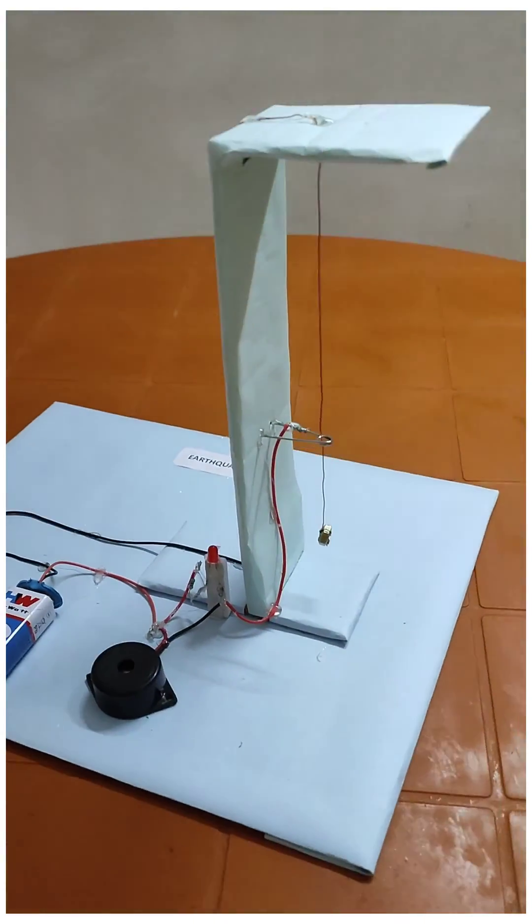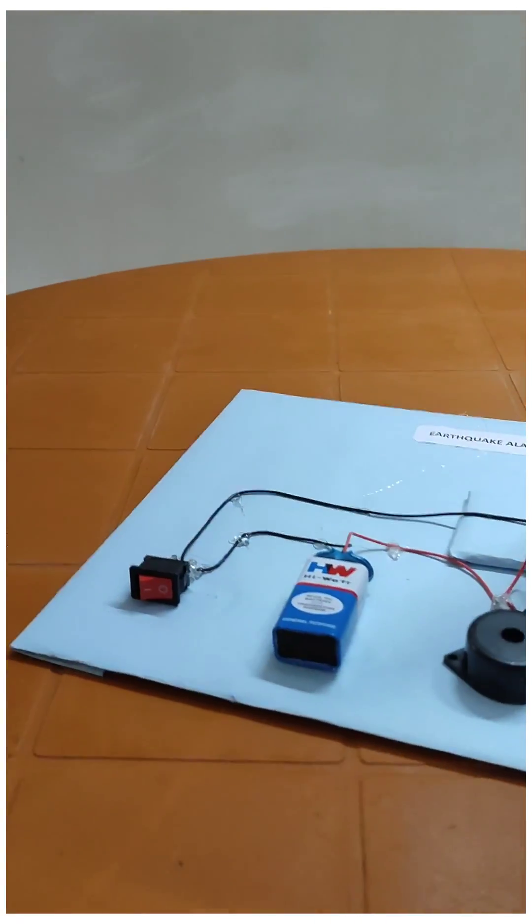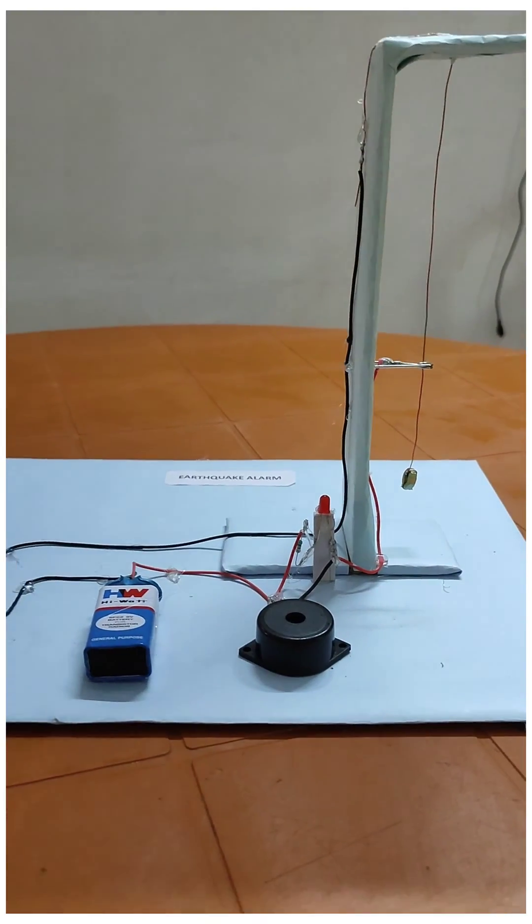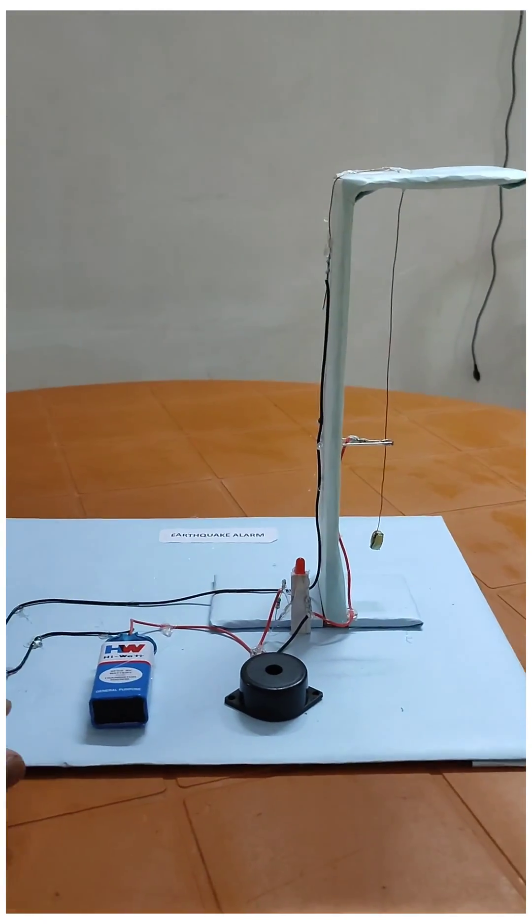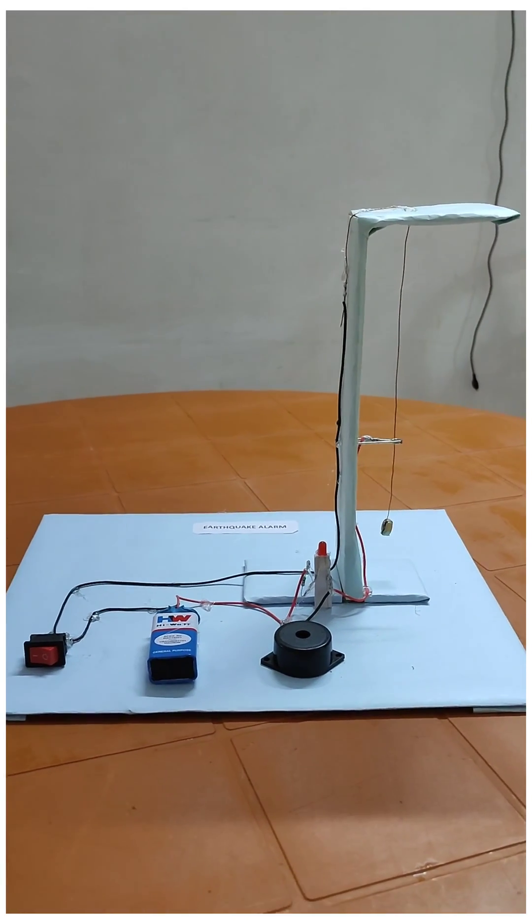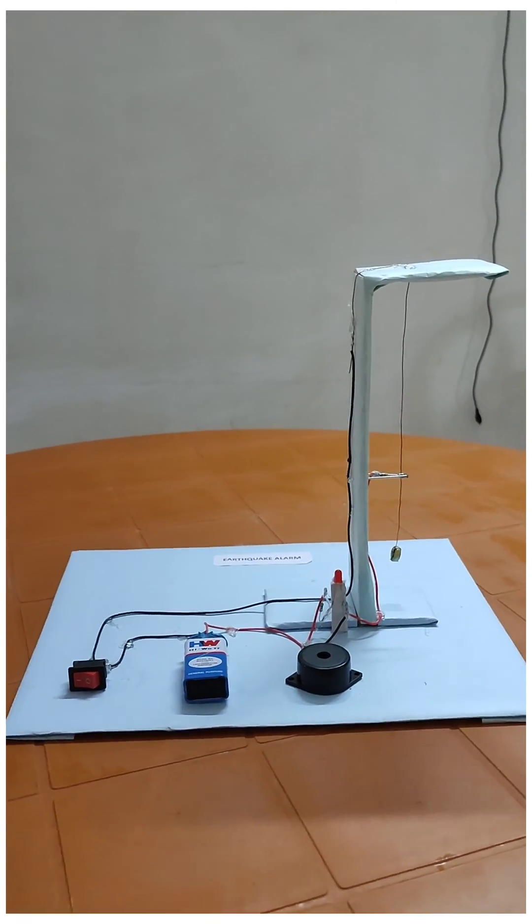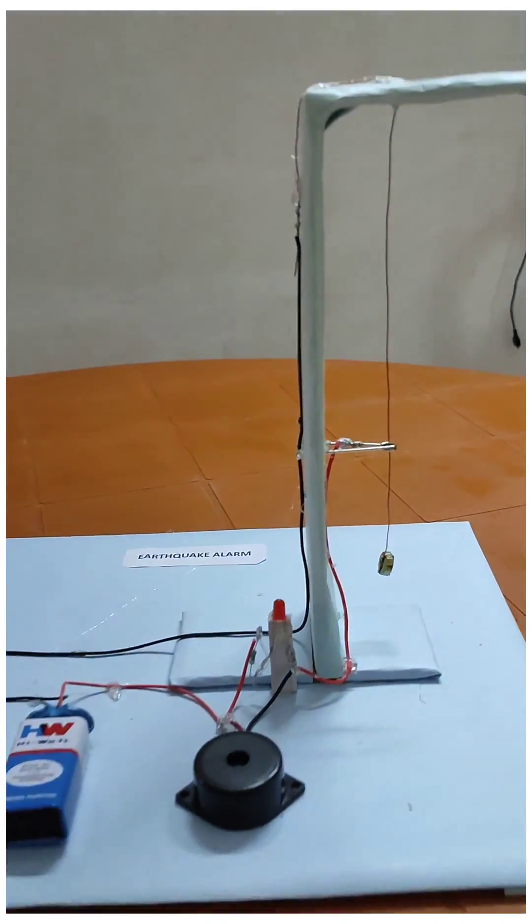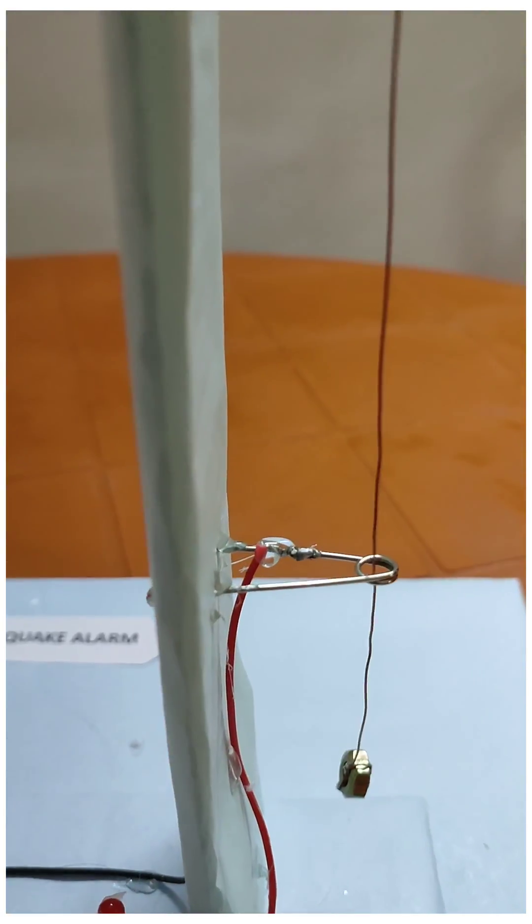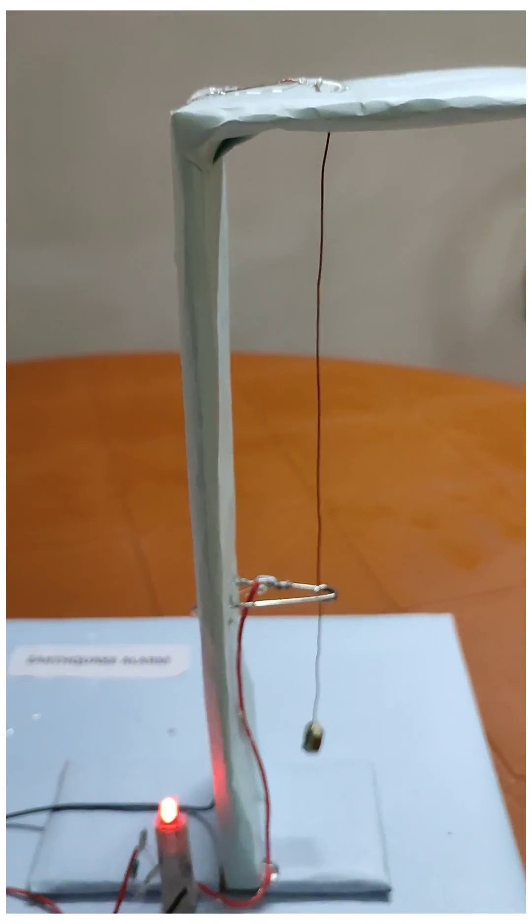When I switch on that device and if that pendulum touches that ring, then the buzzer and the red LED will turn on. In case of earthquake, due to the vibration, that pendulum touches that ring and the buzzer and red LED will turn on.